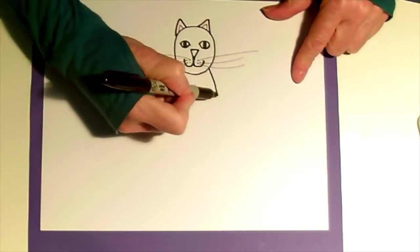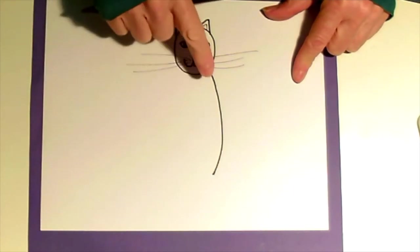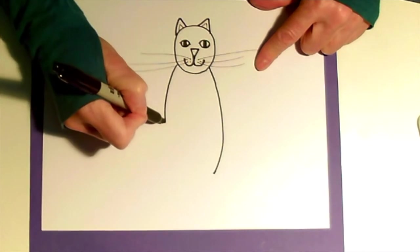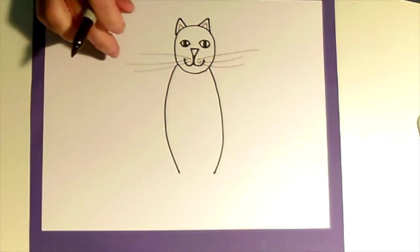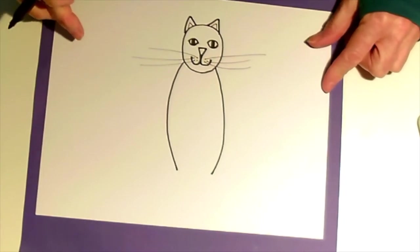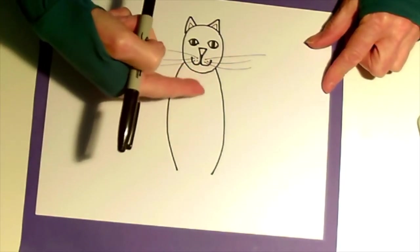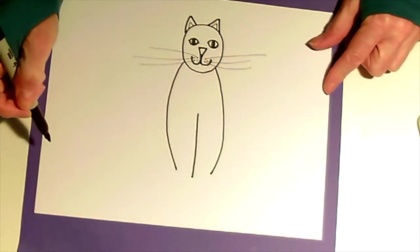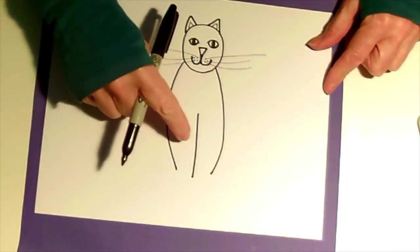That's going to be the cat's body. For the front legs come down around halfway and just draw a straight line.